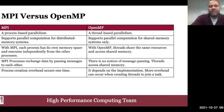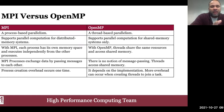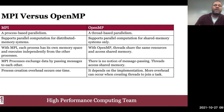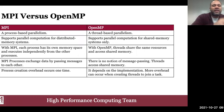MPI is a process-based parallelism. Someone can use it to write parallel applications for distributed memory systems in which each process runs independently on a different node of the cluster, has its own memory address space, and exchanges its local data with the other processes across the network by passing messages. Whenever I use the word 'messages,' it can also mean data — it could be an array of numbers, a list of strings, or any type of data.